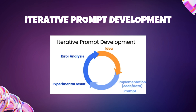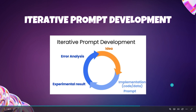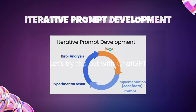The iterative prompt development starts off with an idea. Once you have that idea, you create a prompt to ChatGPT and implement the code, data, or whatever else you have. Then once you get a response, you try it out and see if it works or not. Based on whether it works, you may get errors, which gives you another idea, and it keeps going in a loop. That's what iterative prompt development is in summary.